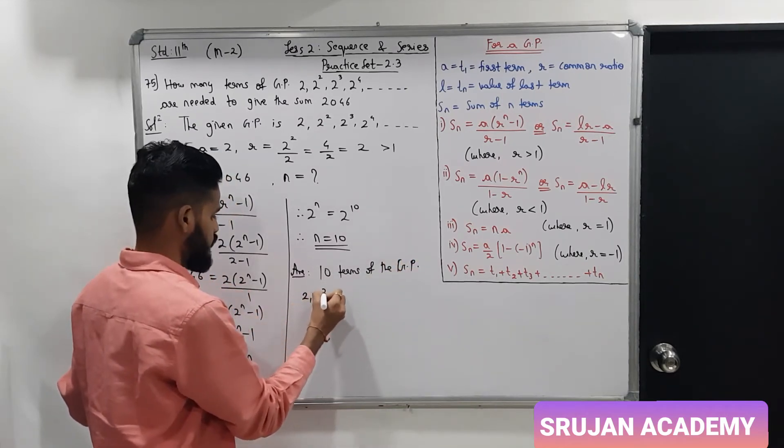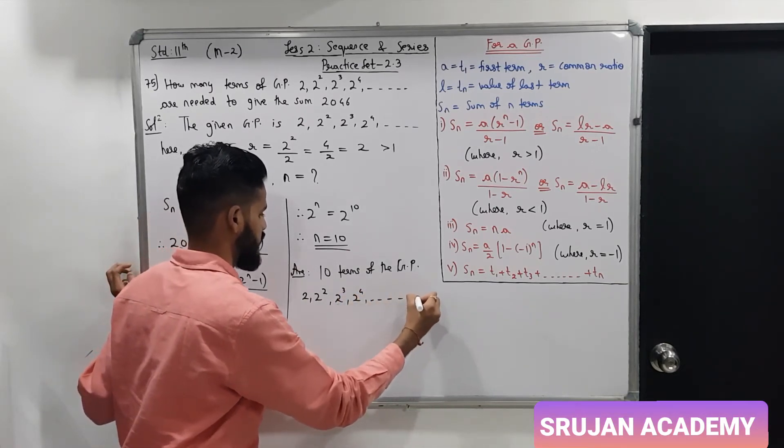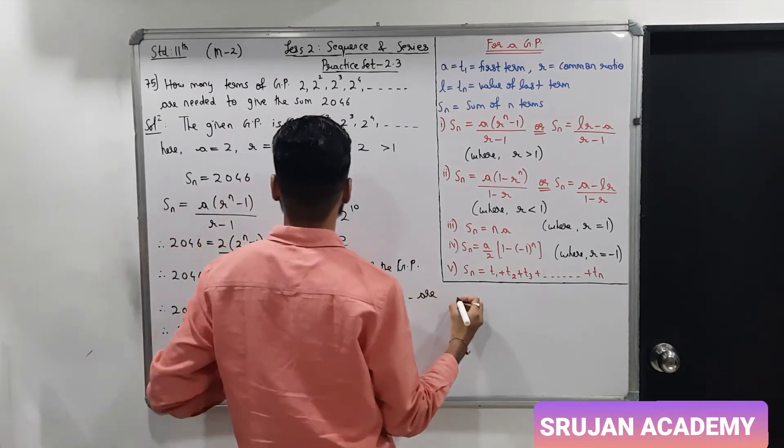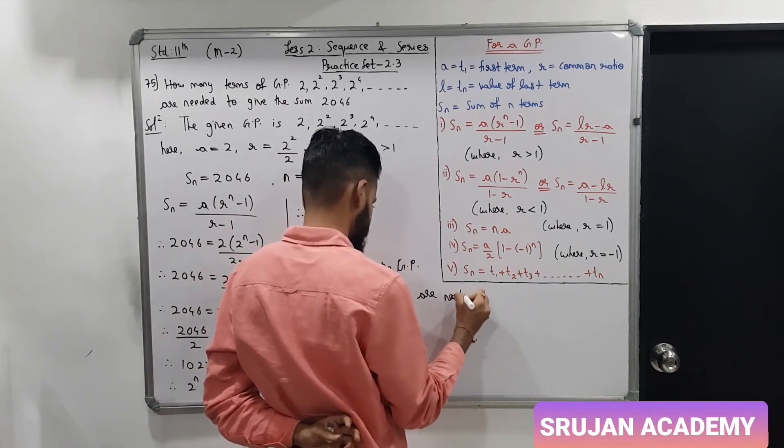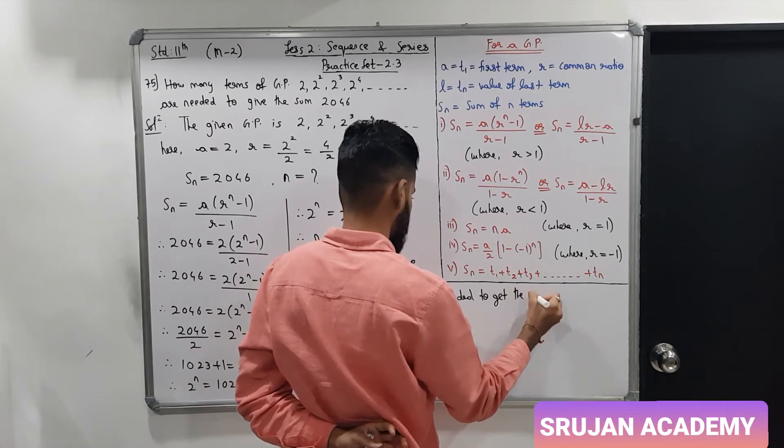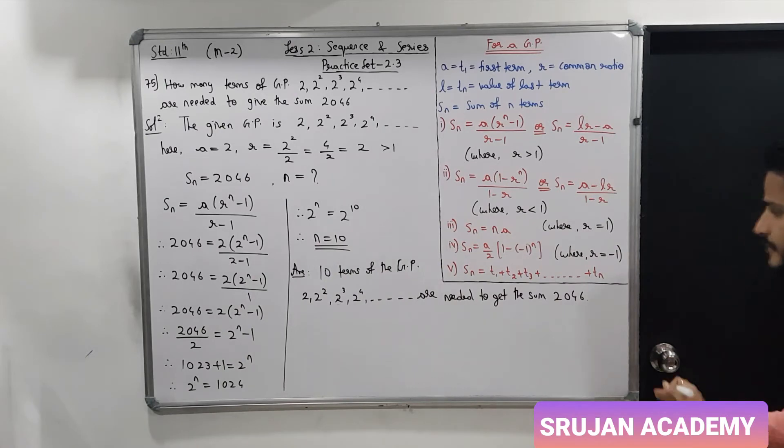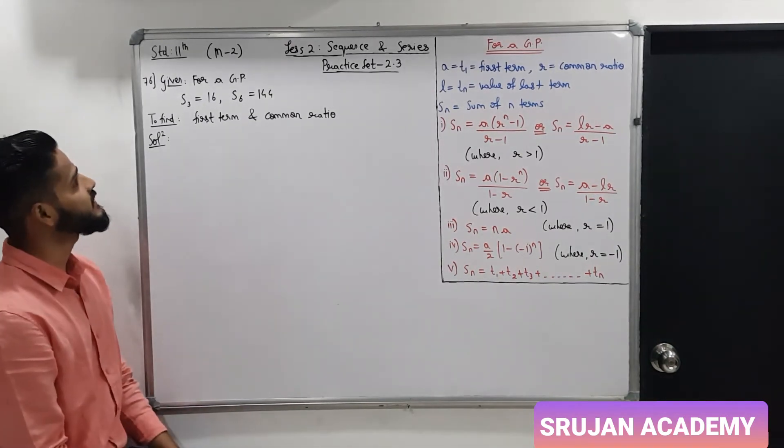So n equals 10. So 10 terms of the GP 2, 2 square, 2 cube, 2 raise to 4 and so on are required or are needed to get the sum 2046.